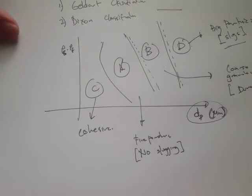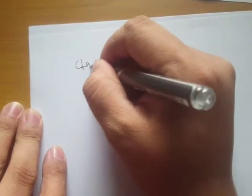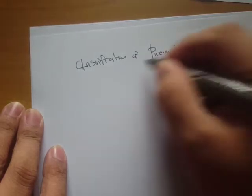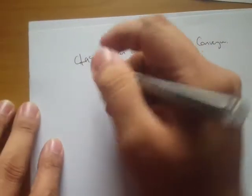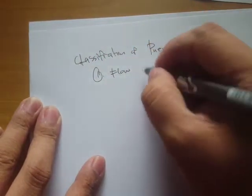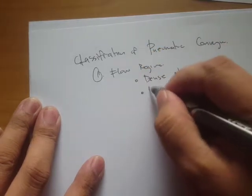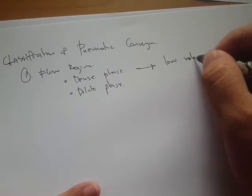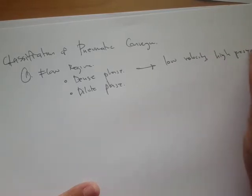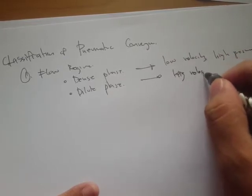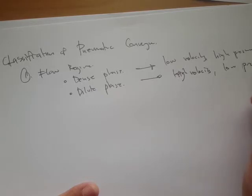Now let's talk about the classification of pneumatic conveyors. The first classification is in terms of flow regime: dense phase and dilute phase. Dense phase is characterized by low velocity but high pressure, while dilute phase is characterized by high velocity but low pressure drop.